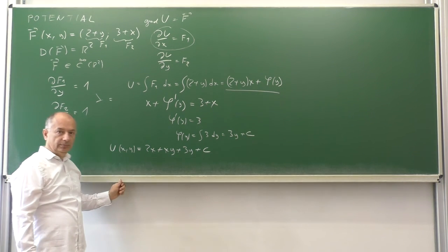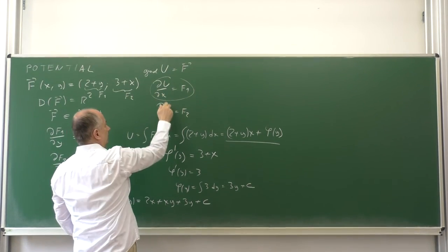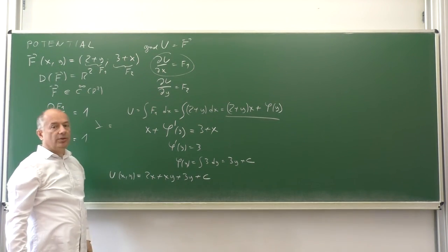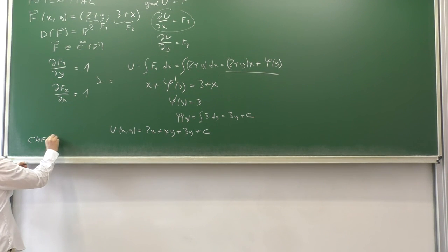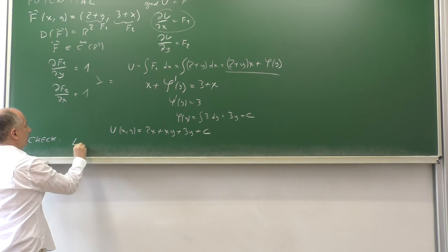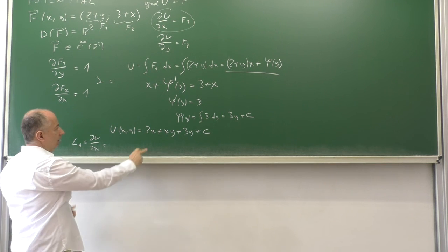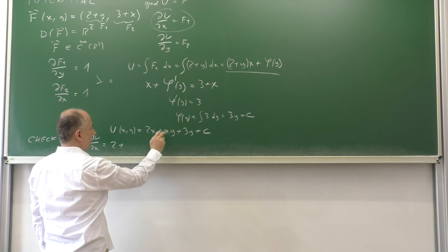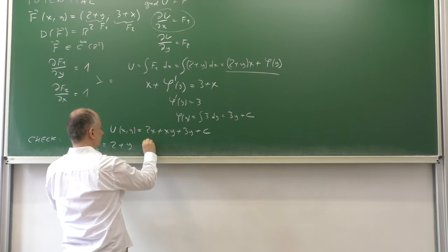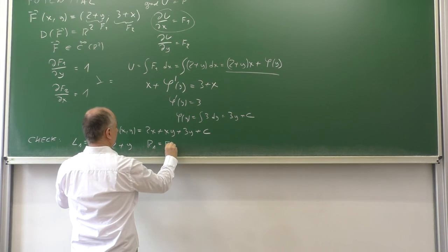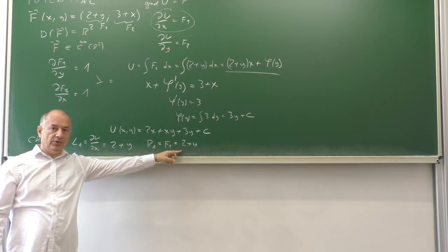We can easily check this by substituting u into these equations and comparing what is on the left and what is on the right. On the left of the first equation we have ∂u/∂x, which is 2 plus y plus 0. On the right we have F1, which is 2 plus y. Yes, it agrees.